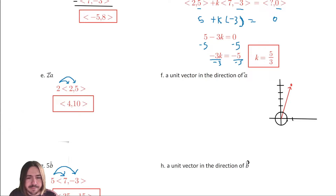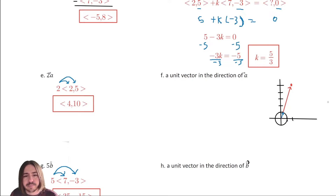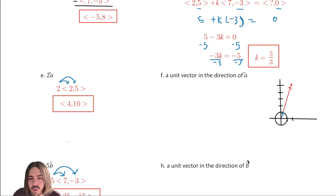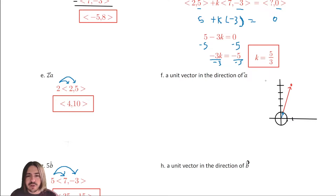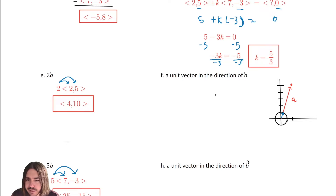To find the unit vector, we first find the magnitude of vector A, then divide each component by that magnitude. The magnitude is found using the Pythagorean theorem — imagine a right triangle where the sides are two and five. The length of that vector is the square root of two squared plus five squared.